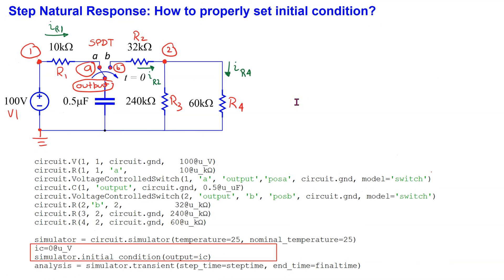The final important caveat is how to set the initial condition properly. Initially, the voltage across the capacitor is zero. This initial condition should ideally be specified as part of the capacitor netlist command. However, at present, this feature does not work properly. Instead, we need to define the initial condition explicitly. So here we are setting the initial voltage at the output node, which is the voltage across the capacitor, to be zero. This statement then invokes the initial condition in the transient simulation.